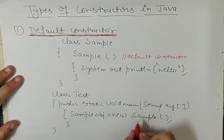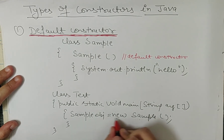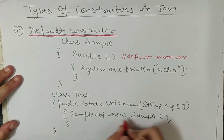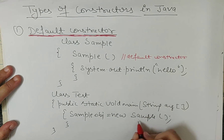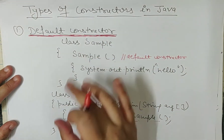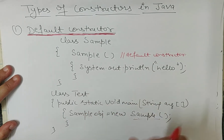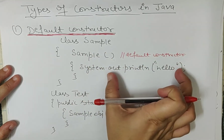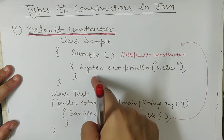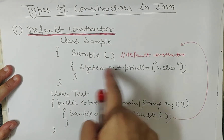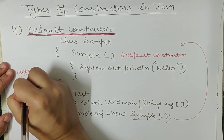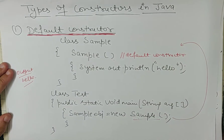Here, at the time of object creation, the constructor is called. I have created an object: 'Sample obj = new Sample()'. As you create the object, the constructor is automatically called. Since we have printed a statement inside the constructor, when the compiler calls the constructor it will execute that statement, and the output will be 'Hello'.